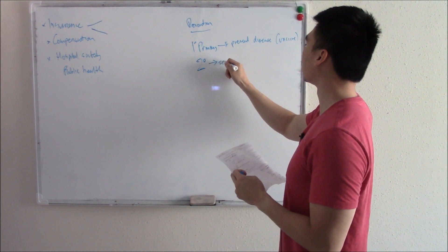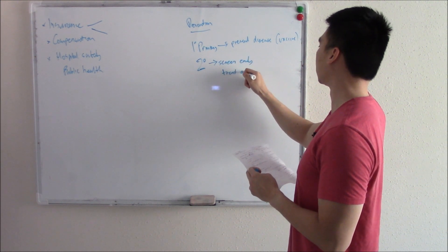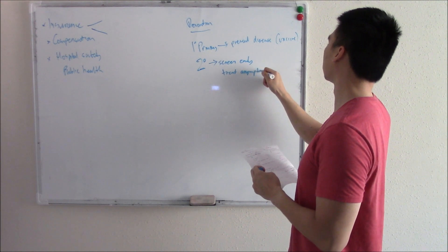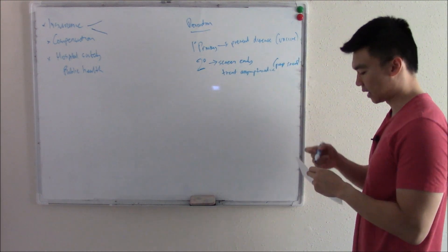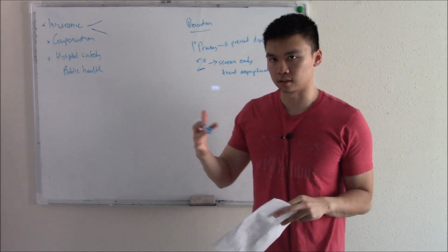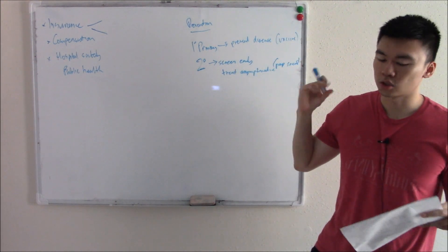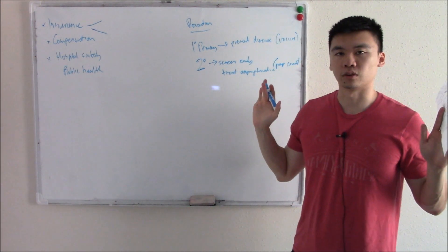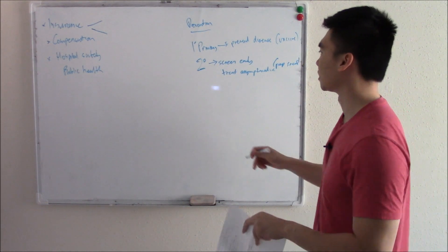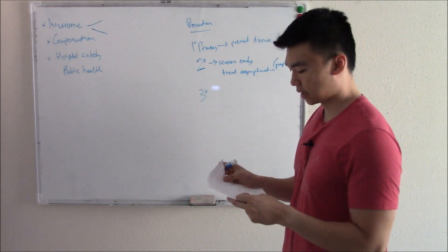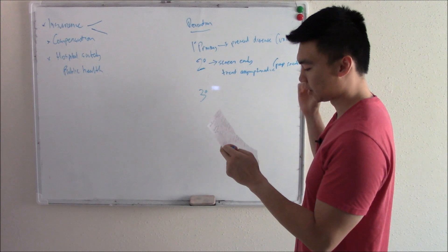And this is basically you screen early and you treat asymptomatic disease. This would be like a pap smear. You might find on the pap smear that some cells have undergone dysplasia. They might be asymptomatic. Treat them early. Treat them fast. They don't progress. You're still doing something for patients that have the disease and you're preventing them from worsening. But if we didn't catch them on this stage, are we going to abandon them? No. We're just going to move on to tertiary disease prevention.